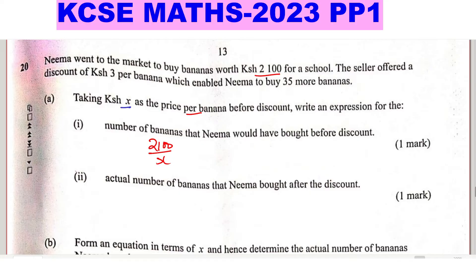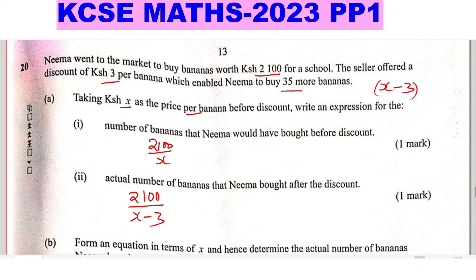Part two: the actual number of bananas Naima bought after the discount. The seller offered a discount of 3 shillings per banana, enabling her to buy 35 more bananas. To get the actual number, we take the amount she had — 2100 — and divide by the new price per banana. After the discount, the price is X minus 3, so the expression is 2100 divided by (X minus 3).